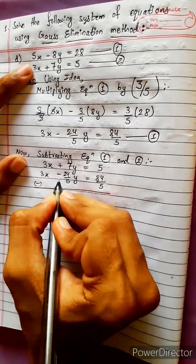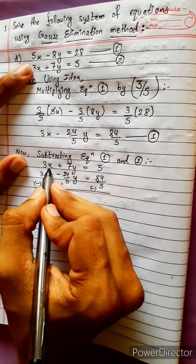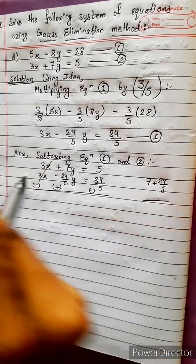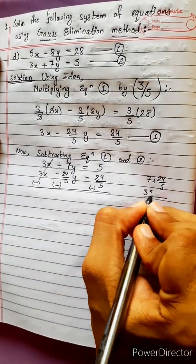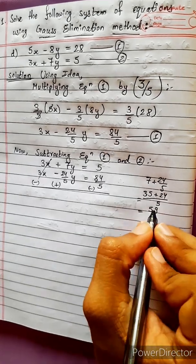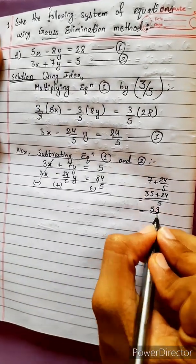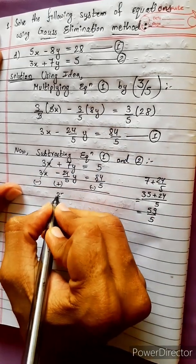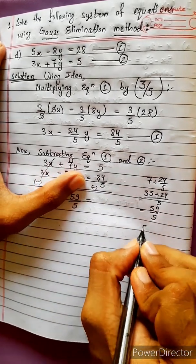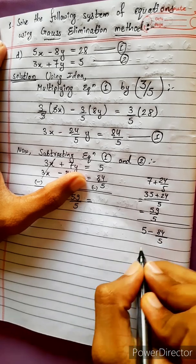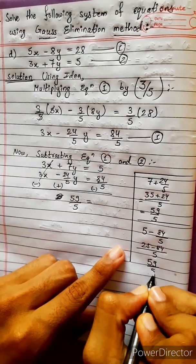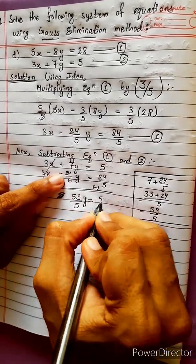Subtracting: the 3x terms cancel. The y coefficient becomes 7 plus 24/5, which equals 35/5 plus 24/5, giving 59/5. The right-hand side is 5 minus 84/5, which equals 25/5 minus 84/5, also equal to 59/5. Let's check — yes, 59/5 equals 59/5. Same thing.